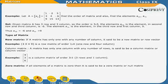Column matrix: A matrix having only one column with any number of rows is said to be a column matrix or a column vector. For example, the matrix with elements 4, 3, 6 is a column matrix of order 3 by 1, which has three rows and one column.